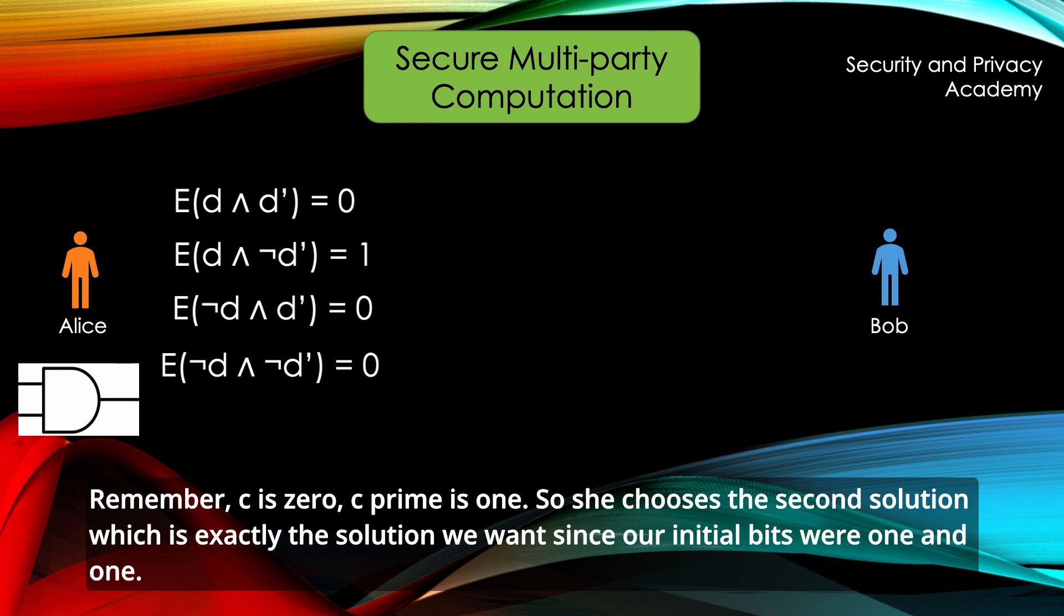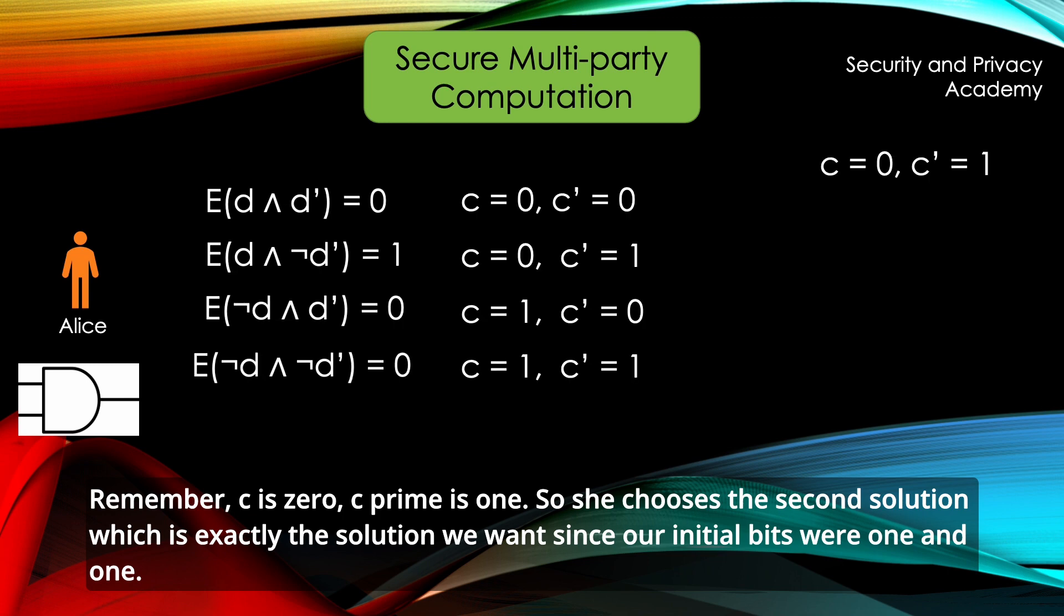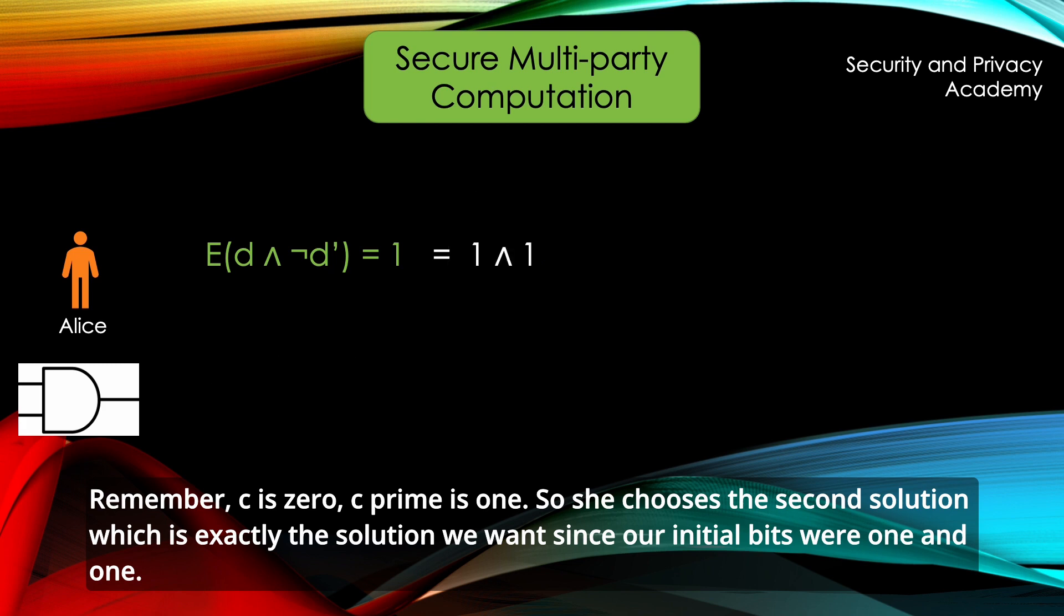Remember that C is 0, C' is 1 and so she chooses the second solution which is exactly the solution we want since our initial bits were 1 and 1.